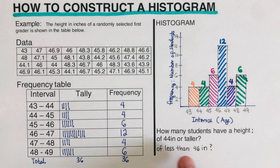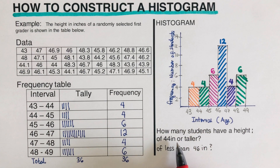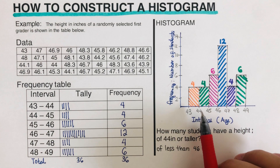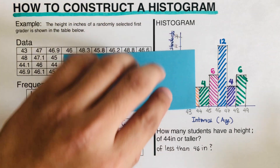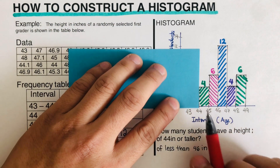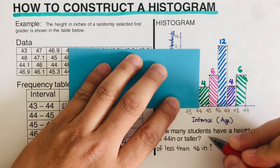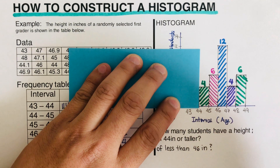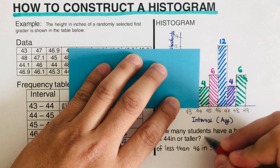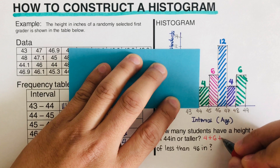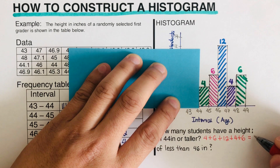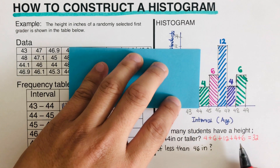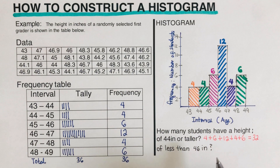Now we have some questions to answer using the histogram. First: how many students have a height of 44 inches or taller? Since 44 is included, we take all intervals from 44 onward — to the right. We add the frequencies: 4 + 6 + 12 + 4 + 6 = 32. So 32 students have a height of 44 inches or taller.